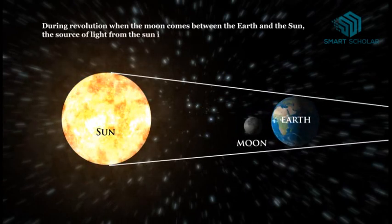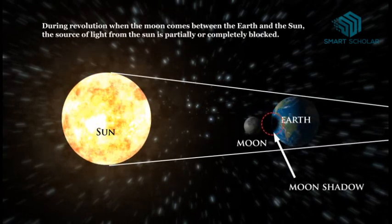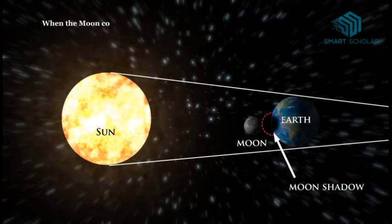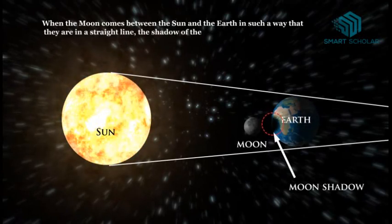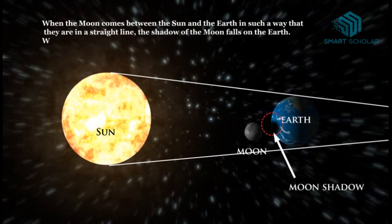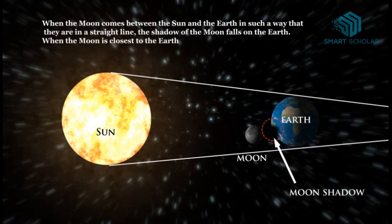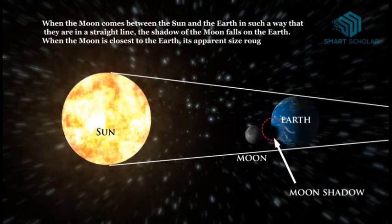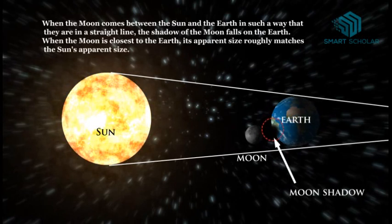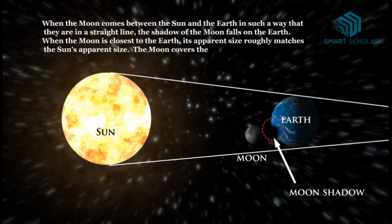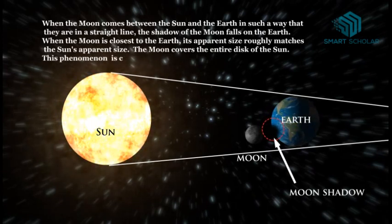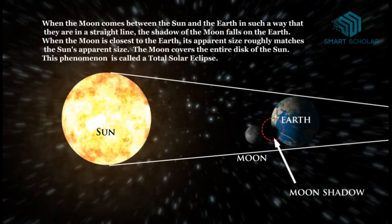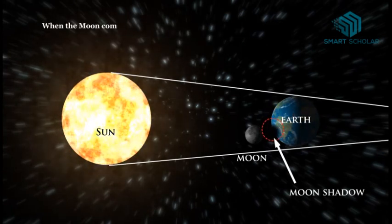When the moon comes between the Sun and the earth in such a way that they are in a straight line, the shadow of the moon falls on the earth. When the moon is closest to the earth, its apparent size roughly matches the Sun's apparent size. The moon covers the entire disk of the Sun.